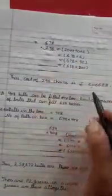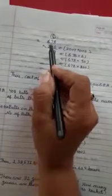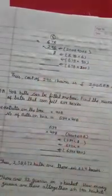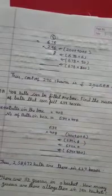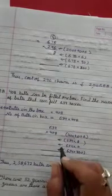Now, multiplication. 678 multiply by 296. Okay, now we will multiply. 6, 8s are 48. 48 write 8 carry 4. 6, 7s are 42. 42 plus 4 is 46. Write 6 carry 4. 6, 6s are 36. 36 and 4, 40.